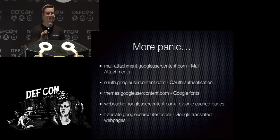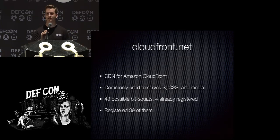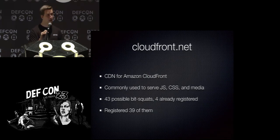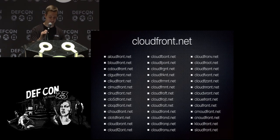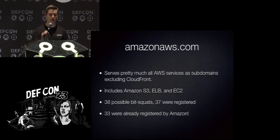It also serves the OAuth authentication for Google, Google Fonts, Google cache pages, and Google translated pages — I'm sure there's no valuable data in any of that. Moving on, I looked at Amazon's cloudfront.net, which serves a lot of popular sites such as ESPN and Amazon.com itself. There were 43 possible bit squats, four already registered, so I registered the rest. Continuing the Amazon theme, I looked at amazonaws.com, which serves all AWS services as subdomains — including Amazon S3, Elastic Load Balancer, and EC2. This is one of the few domains where many bit flips were already owned: Amazon owned 33 out of 38 possible bit flips.